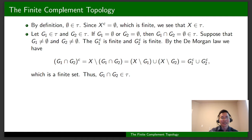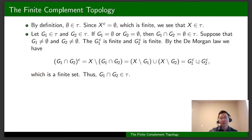We are going to show that tau is closed under the intersection of two sets. Take G1 in tau and G2 in tau. It is important to consider the case where the set involved is empty, because A belongs to tau if and only if A's complement is finite or A is the empty set. If G1 or G2 is the empty set, their intersection is the empty set, which is in tau. For the non-empty case, the complements of G1 and G2 are both finite. By De Morgan's law, the complement of G1 ∩ G2 is the union of their complements, which is also finite. Therefore, G1 ∩ G2 belongs to tau.